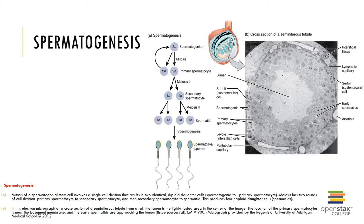Every secondary spermatocyte contains 23 chromosomes, each of which consists of a pair of duplicate chromatids. The secondary spermatocytes soon enter meiosis two, which yields four haploid spermatids each containing 23 chromosomes. For each primary spermatocyte that enters meiosis, four spermatids are produced.